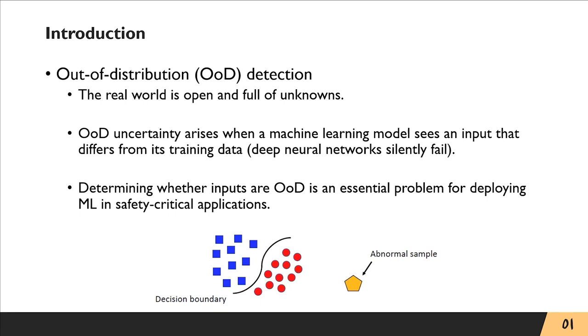Also, it is widely known that deep neural networks silently fail when OoD samples are given. Determining whether inputs are OoD is an essential problem for deploying ML in safety critical applications.